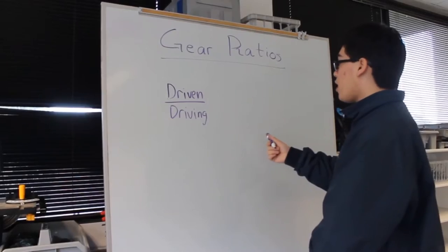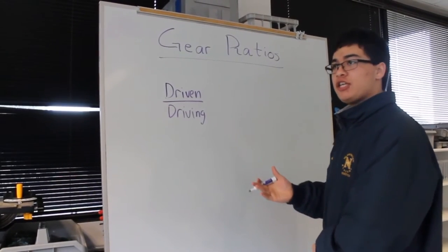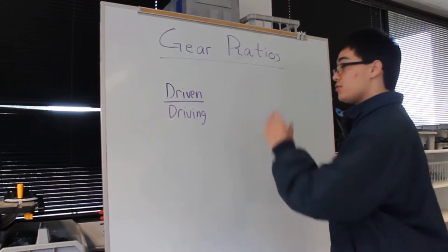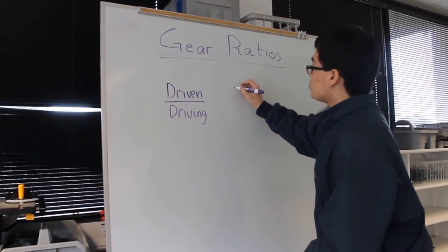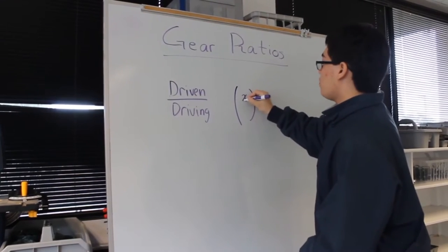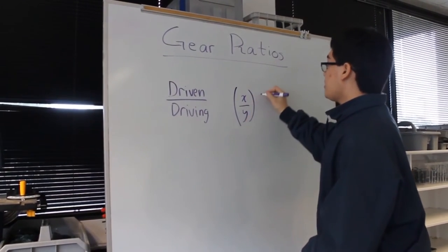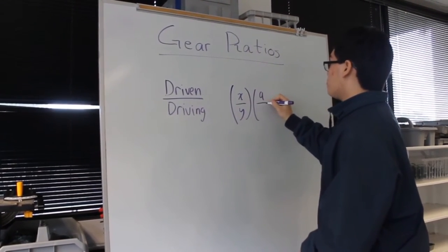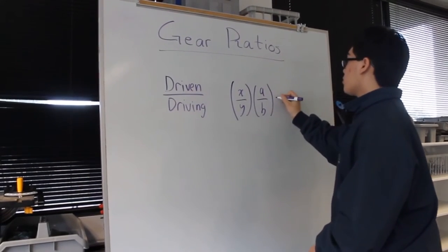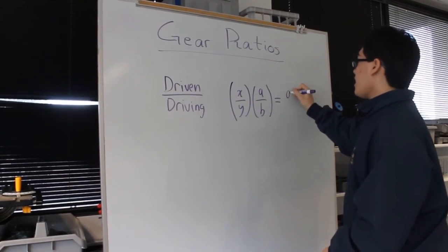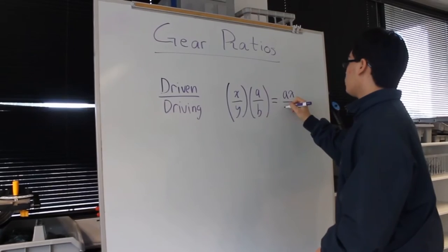For compound gear ratio, it's pretty much the same except you multiply the two gear ratios together. So if your first gear ratio is X over Y, and your second gear ratio is A over B, then your final gear ratio will be AX over BY.